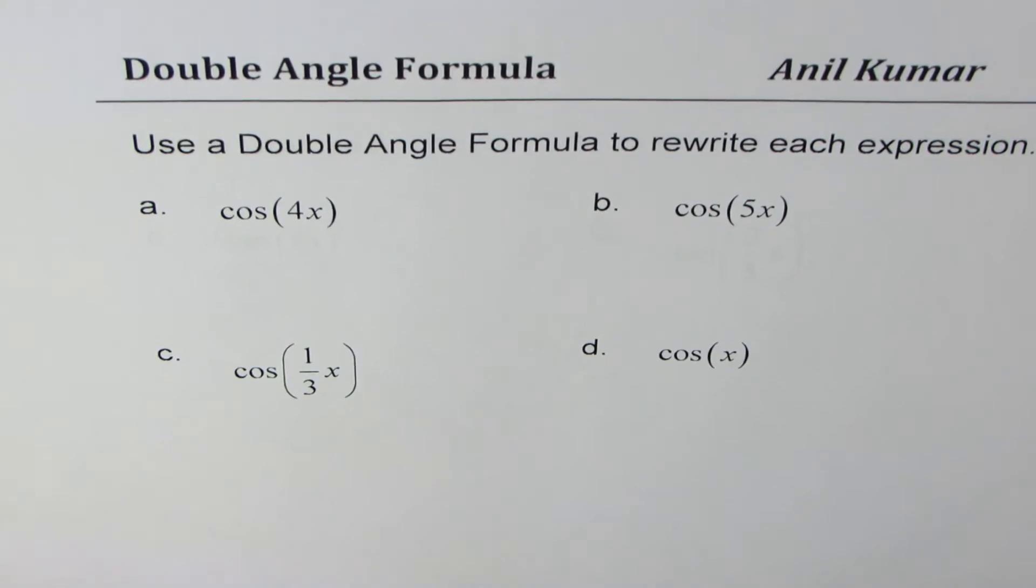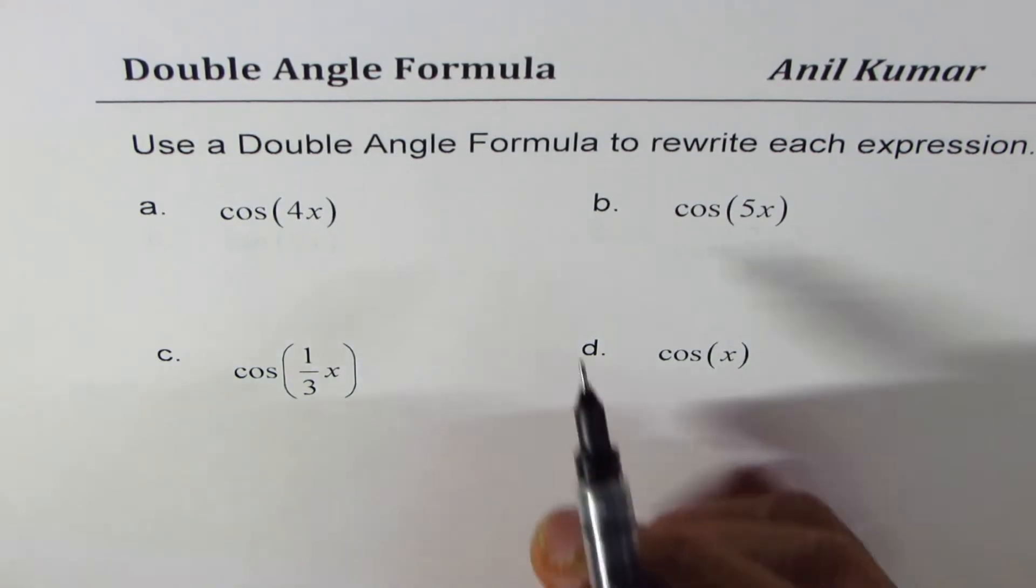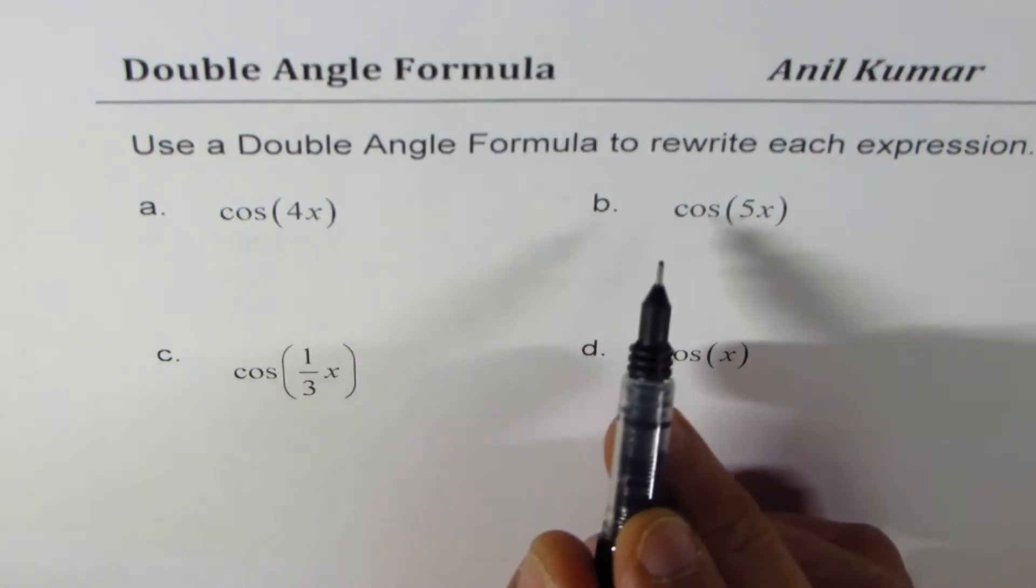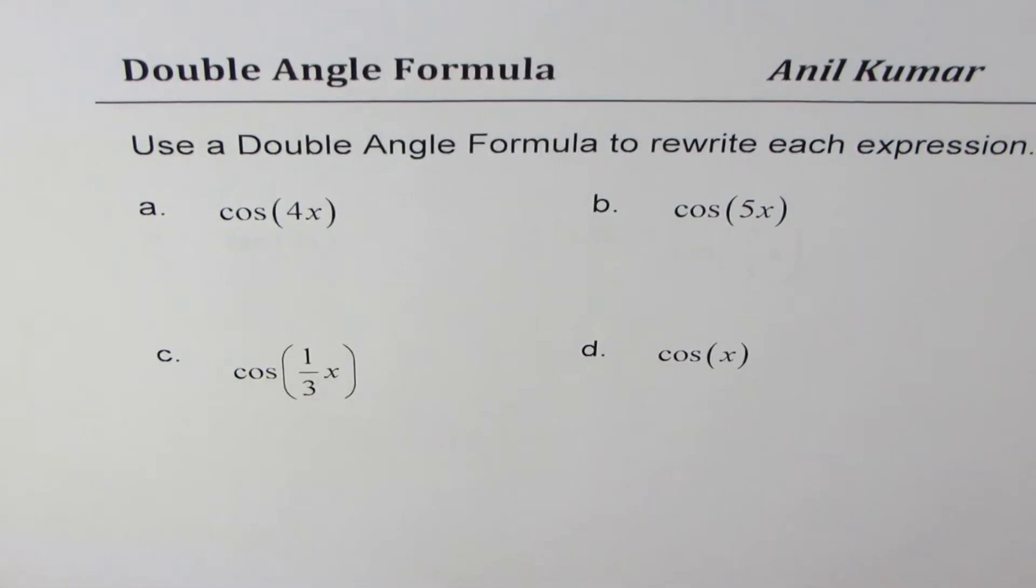So in cosine, we have 4 of these. Now, as you know, cos function could be written in different ways.